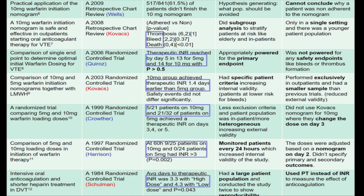Harrison et al. showed that the INR became supratherapeutic in 10 mg patients more than in 5 mg patients at 60 hours. This trial had a lot more monitoring, increasing its internal validity, but dose adjustments were made earlier than usual — at day 2 rather than the conventional day 3.